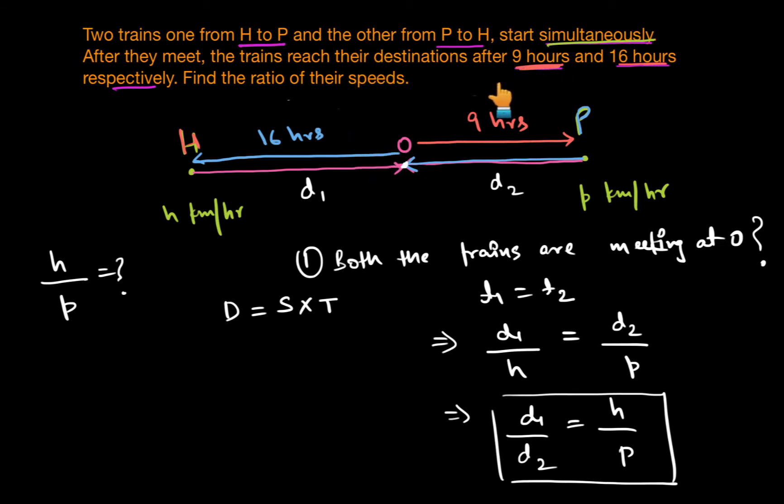Now again it says that the same train that started from P took 16 hours to reach H and the train that started from H took 9 hours to reach point P. So for this first situation, we can say distance is D1, time taken is 16 hours and speed would be, we are talking about the train that started from P. This train took 16 hours to reach H after they have met at point O. So we will take the speed P kilometers per hour.